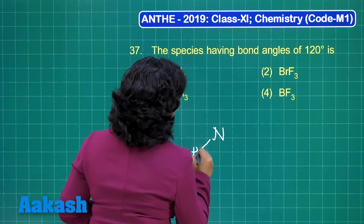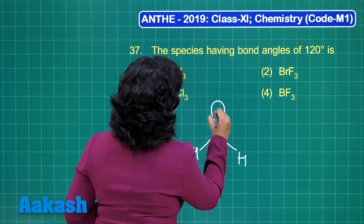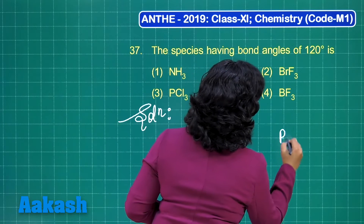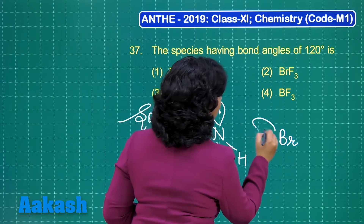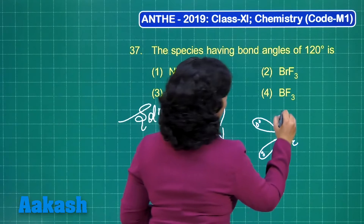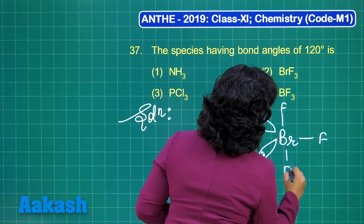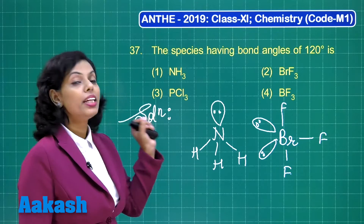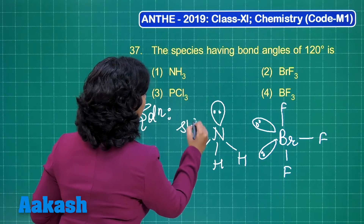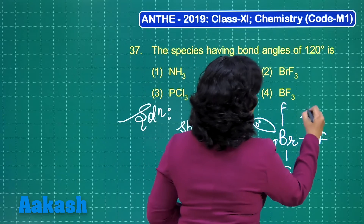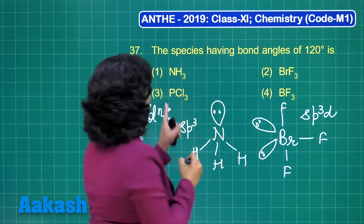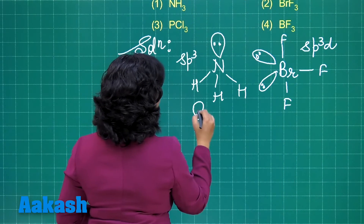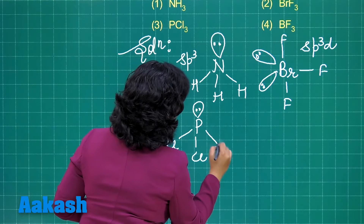Ammonia has a pyramidal structure with sp3 hybridization, so its bond angle is not 120°. BrF3 has two lone pairs on bromine and three fluorine atoms — it is T-shaped with sp3d hybridization, so its bond angle is also not 120°. PCl3 is similar to ammonia: phosphorus has a lone pair with three chlorine atoms and sp3 hybridization.